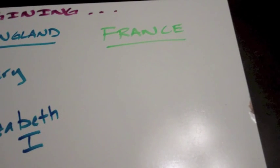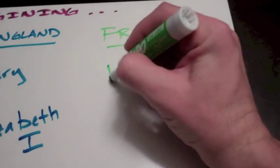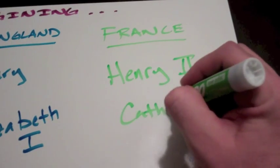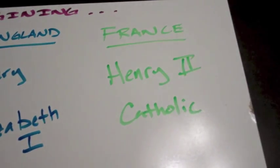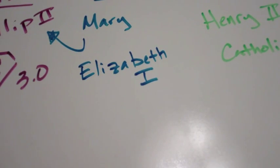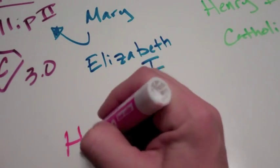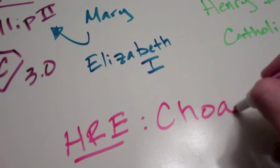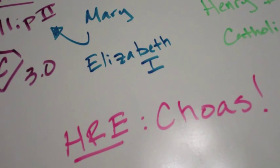And then we have France, being ruled by Henry II, who is Catholic — though he doesn't retain his power for very long. And then that leaves us with the Holy Roman Empire, which is just in a state of chaos. So that's where we are at the beginning of this time period, and we will go through each of these countries in more detail in our subsequent videos.